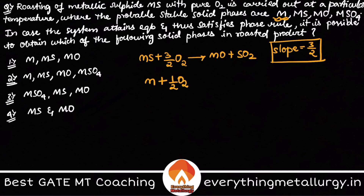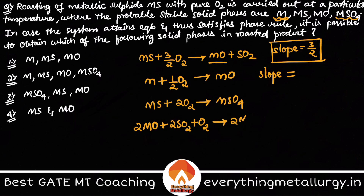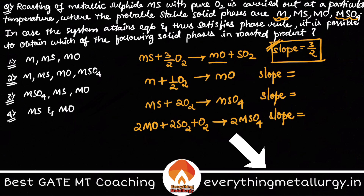The remaining equations: MS + 2O₂ → MSO₄, and MO converting to MSO₄: 2MO + 2SO₂ + O₂ → 2MSO₄. Now we need to calculate the different slopes. For the reaction M → MO, there is no SO₂ involved, so this reaction occurs at constant P(O₂), meaning the line is vertical: P(O₂) = K.